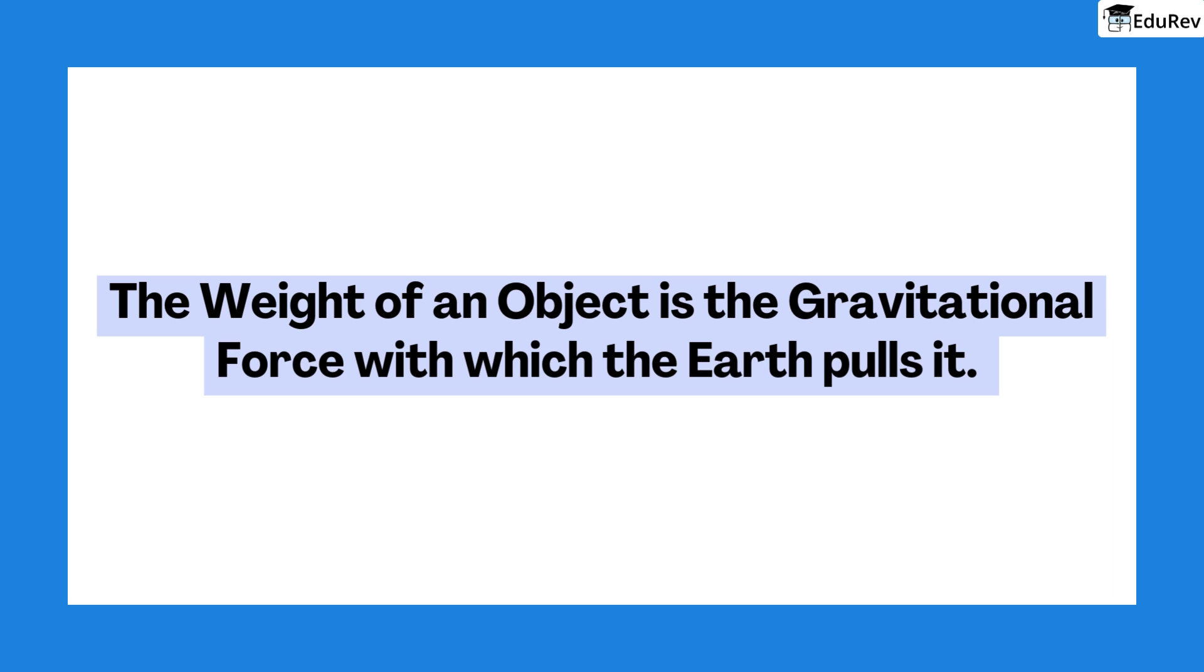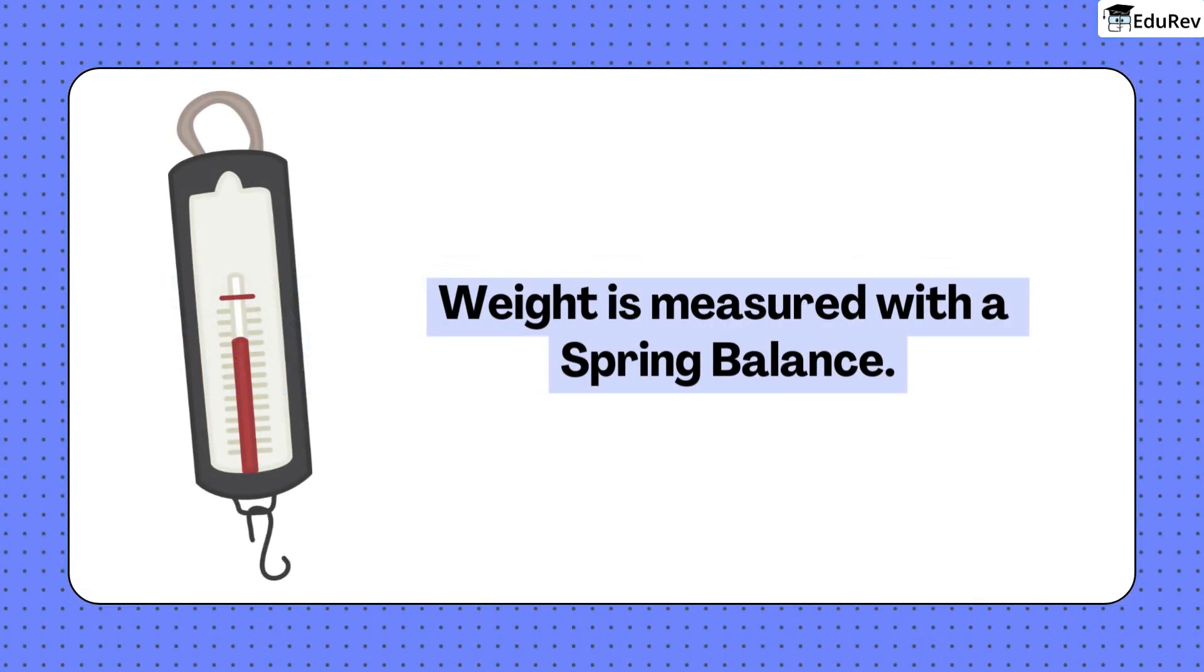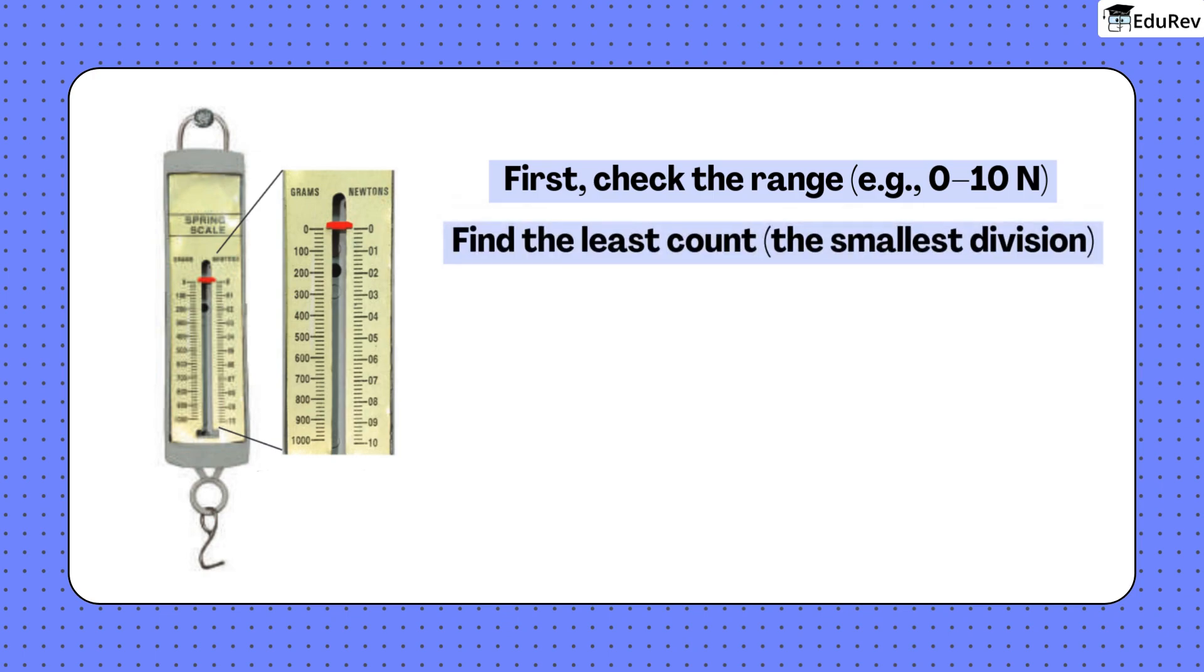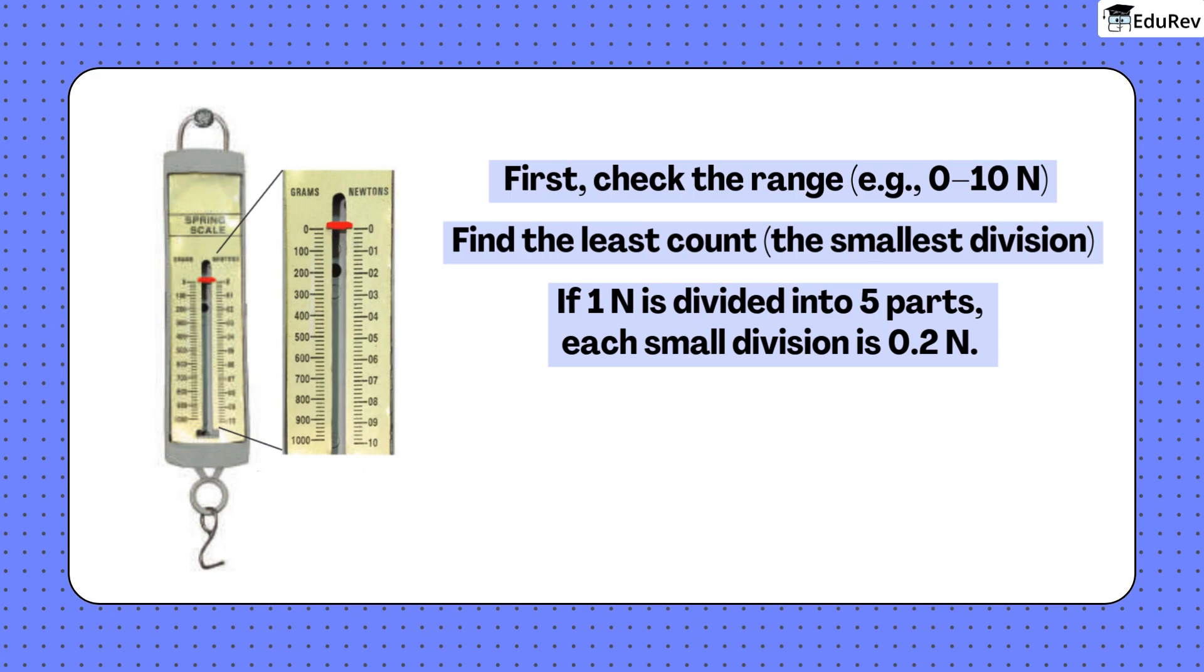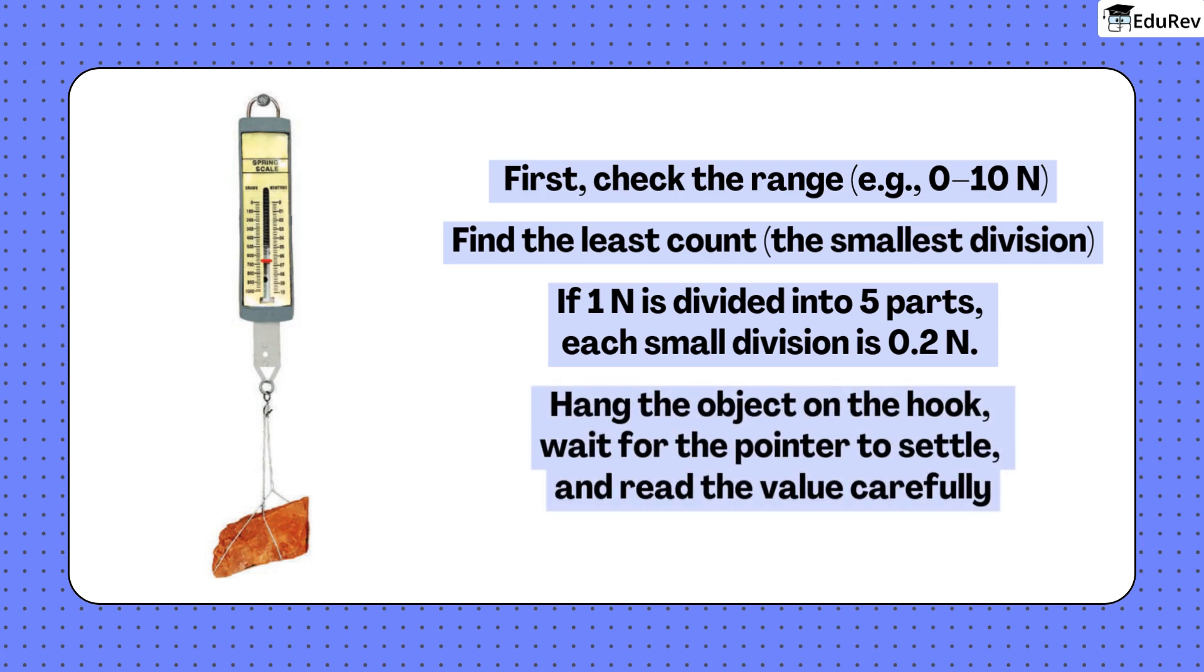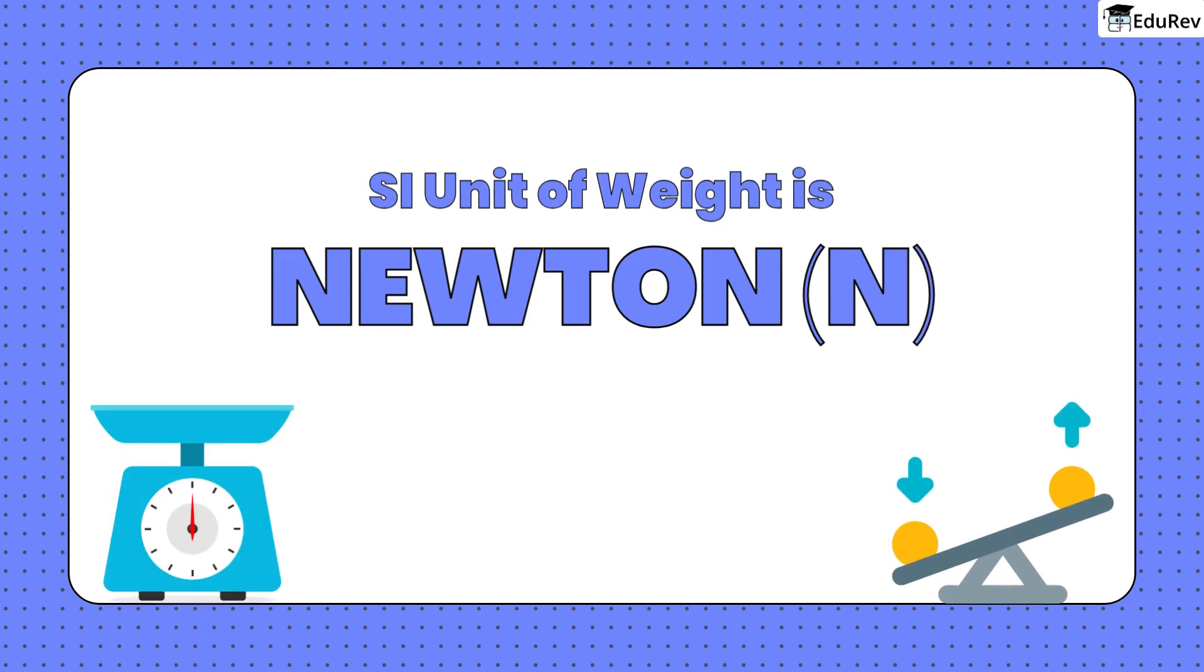What is weight? The weight of an object is the gravitational force with which the earth pulls it. We measure weight with a spring balance. First, check the range, example 0 to 10N. Next, find the least count, the smallest division. If 1N is divided into 5 parts, each small division is 0.2N. Hang the object on the hook, wait for the pointer to settle and read the value carefully. Since weight is a force, its unit is the Newton.